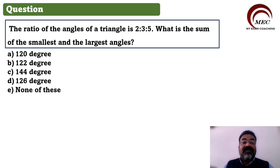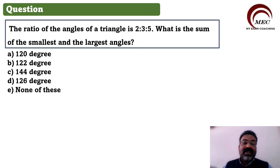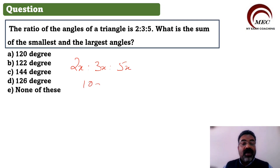Here is the first question selected from the IBPS paper. The ratio of the angles of a triangle is 2:3:5. What is the sum of the smallest and the largest angle? We need to find the sum of the smallest and largest. The ratio is given as 2:3:5, so let us take the angles as 2x, 3x, and 5x. The total is 10x.